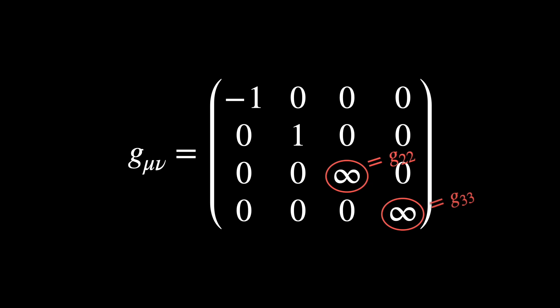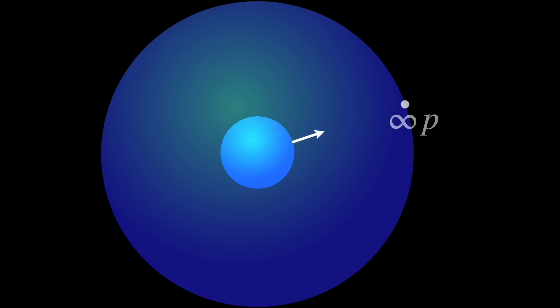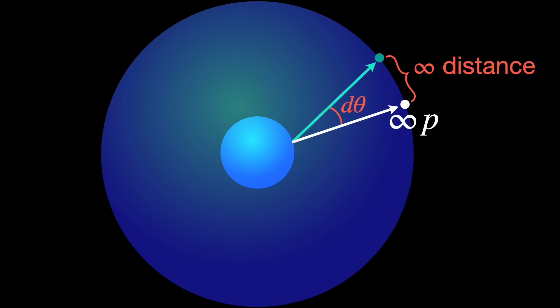What about those angular entries? As R tends to infinity, the sphere becomes infinitely large, so the metric components for angular directions diverge, simply reflecting the fact that moving a tiny angle at infinity sweeps an infinite physical distance. In the limit, all directions collapse to the same ideal point at infinity, similar to what happens in projective geometry.